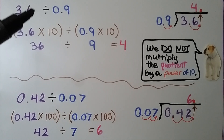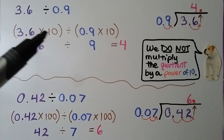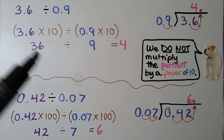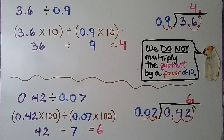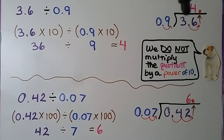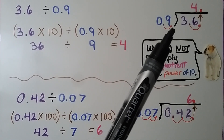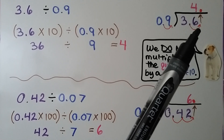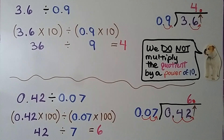Here we have 3 and 6 tenths divided by 9 tenths. We can multiply 3 and 6 tenths by 10 to make it 36, and 9 tenths becomes 9. 36 divided by 9 is equal to 4. We moved the decimal point one hop to the right by multiplying by 10, so the dividend moved one hop to the right. The decimal point goes straight up, giving a quotient of 4. We do not multiply the quotient by a power of 10 — only the divisor and the dividend.